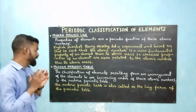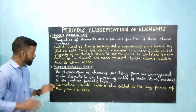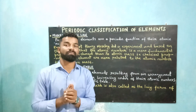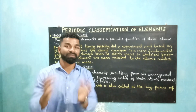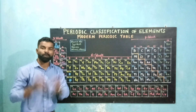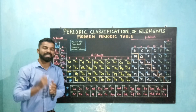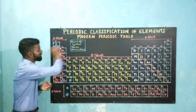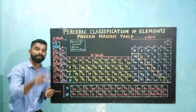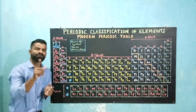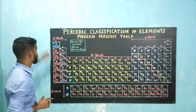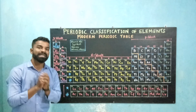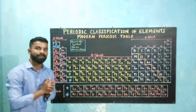The modern periodic table is also called the long form of the periodic table. The modern periodic table contains seven horizontal rows which are called as periods, and they are numbered from one to seven. So there are seven periods in the modern periodic table.